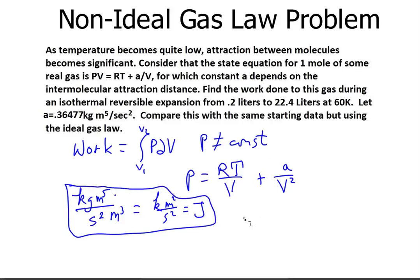We just need to make sure that everything stays in SI units. And we also have liters. Well, 0.2 liters is going to be 0.0002 cubic meters so that we can keep in SI units. And 22.4 liters is going to be 0.0224 cubic meters.